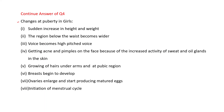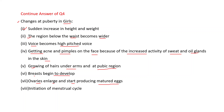Changes at puberty in girls: sudden increase in height and weight; the region below the waist becomes wider; voice becomes high pitched; getting acne and pimples because of increased activity of sweat and oil glands; growing of hairs underarms and at pubic region; breasts begin to develop; ovaries enlarge and start producing matured eggs and initiation of menstrual cycle.